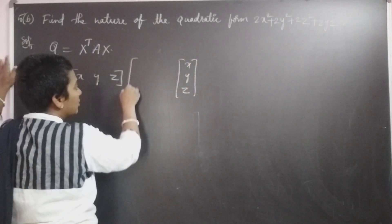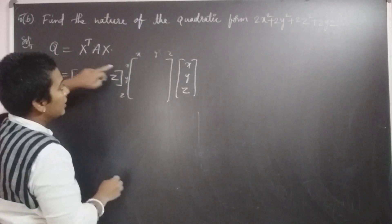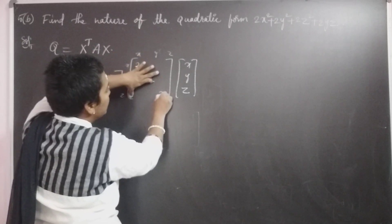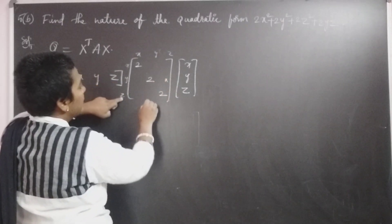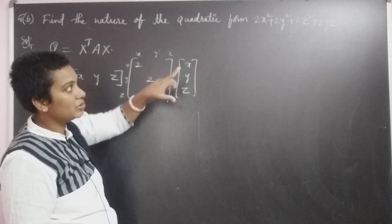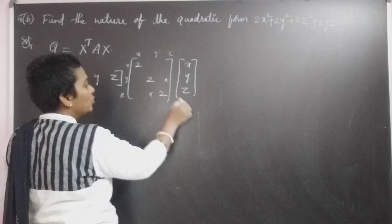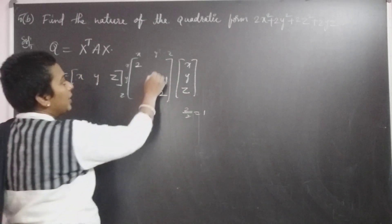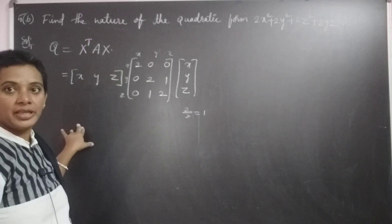In the A matrix, the diagonal elements correspond to x squared, y squared, z squared. Here x into x is x squared, so the coefficient is 2. Y into y is y squared, coefficient is 2. Z into z is z squared, coefficient is 2. For the yz term, y and z occupy two positions — the y,z place and z,y place. So 2yz is distributed as half to each, giving 2 divided by 2 equals 1 in both the y,z and z,y positions. The remaining positions, such as x,y and x,z terms, are absent in the quadratic form, so those entries are 0.